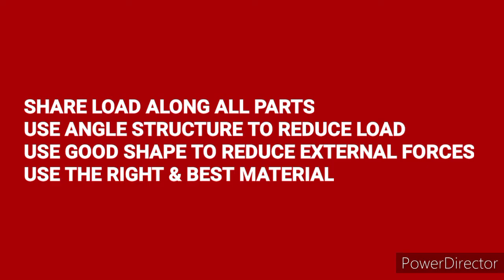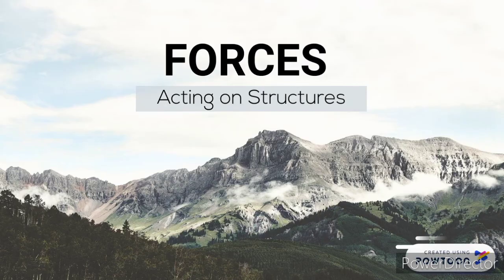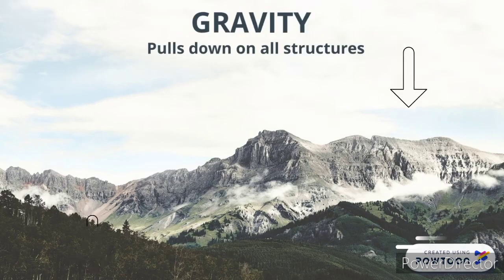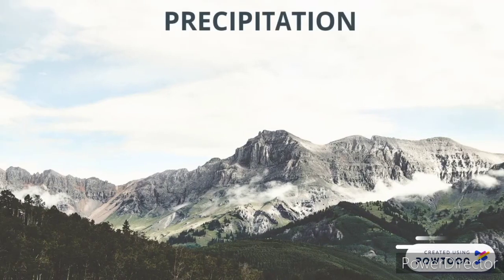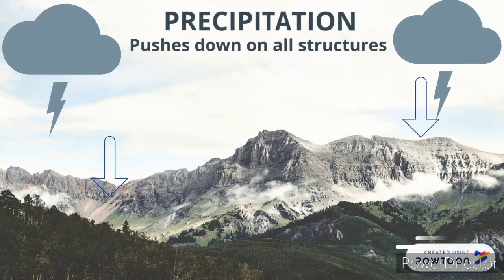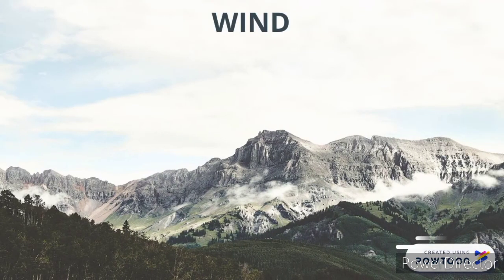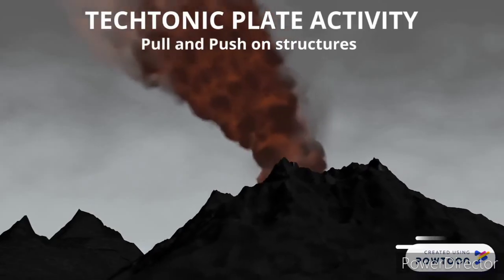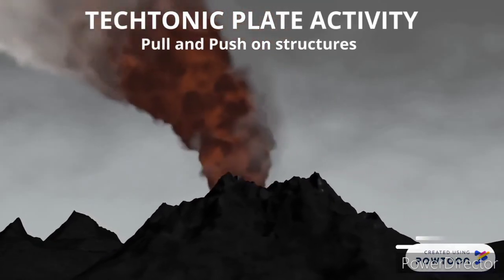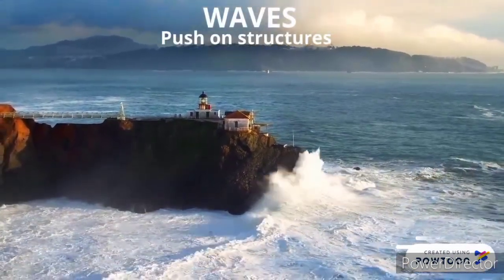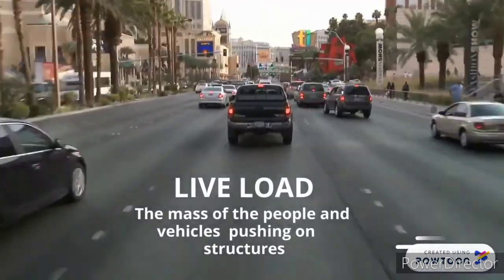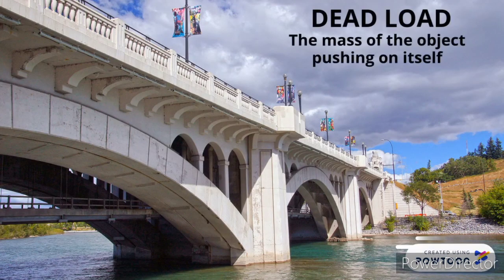External forces act on the outside of the structure. Gravity pulls down on all structures. Precipitation pushes down on all structures. Wind pushes on all structures. Tectonic plate activity pulls and pushes on structures. Waves push on structures. Live loads are the mass of people and vehicles pushing on structures. Dead load is the mass of the object pushing on itself.